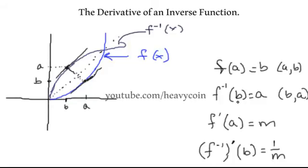It turns out that the derivative of the inverse, plugging B in, would be 1 over M. That's right — all you have to do is find M and then take its reciprocal and you've found the derivative of the inverse at B. The steps are: find A, plug A into the derivative of the function to get M, and then take the reciprocal.